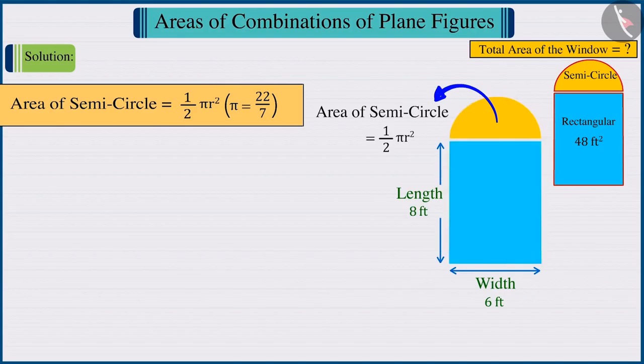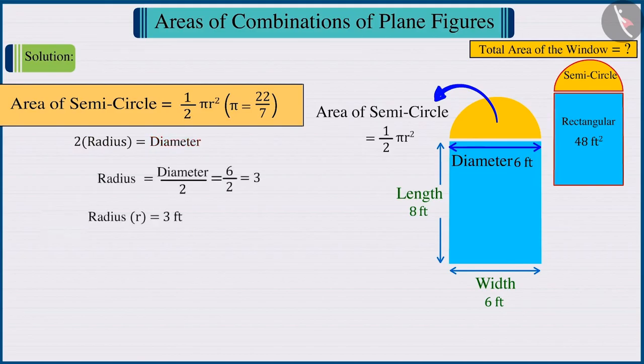Observing the shape of the window carefully, we can find that the diameter of the semi-circle represents the width of the window. And we know that the diameter is twice the radius, for which we can say that the radius of the circle will be 3 feet.